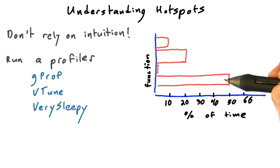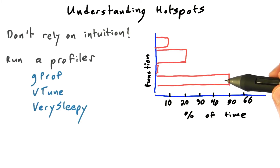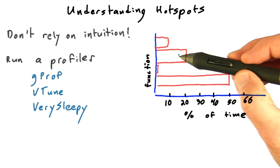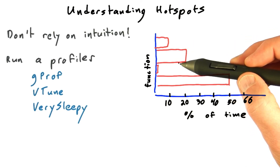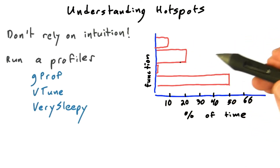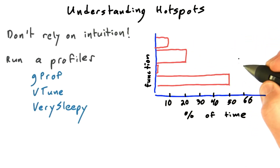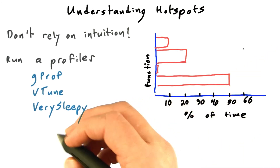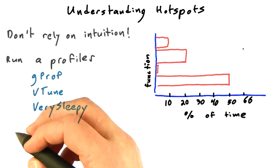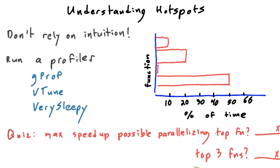Maybe your intuition would have told you that this is where the time is going. Often you do know that first hotspot, but sometimes you're surprised by the second and third hotspot — sometimes they're not what you think. This gives you a starting point on where to begin parallelizing the code, and an indication of how much speedup you can expect.